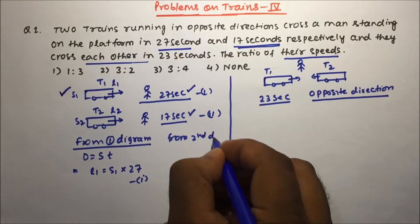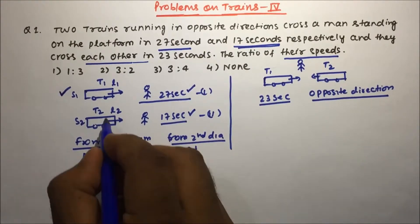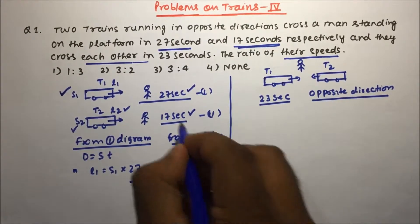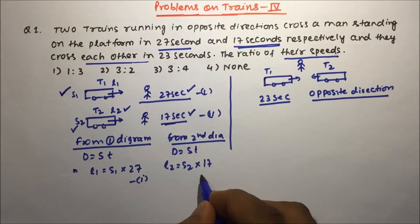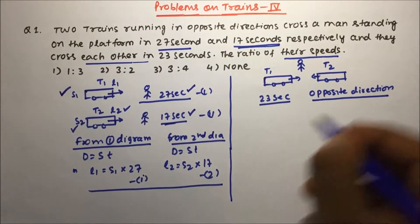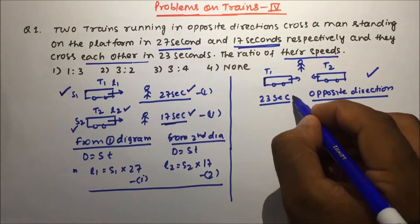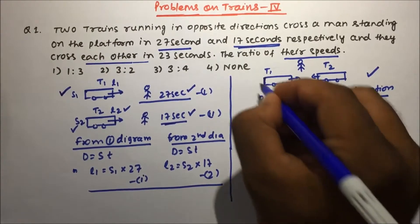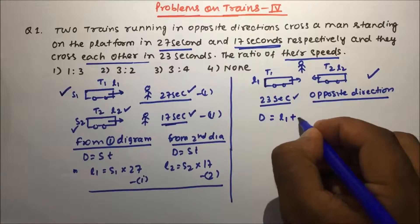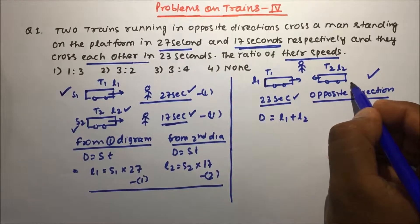From the second diagram, again using D = S×T, the length L2 = S2 × 17. This is equation 2. Now for the second part: when the two trains cross each other, the total distance covered is L1 + L2, since one train must pass the full length of the other.